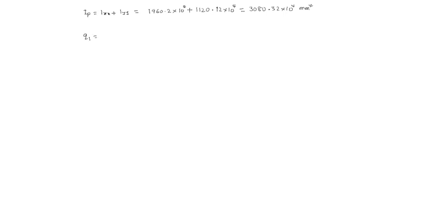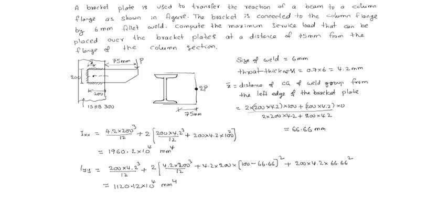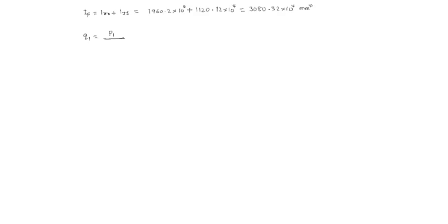Now we find Q1, the direct shear stress. Each side carries load P1, so Q1 = P1 / (area of weld group) = P1 / [(2 × 200 + 200) × 4.2] = 0.0003968 P1 N/mm².